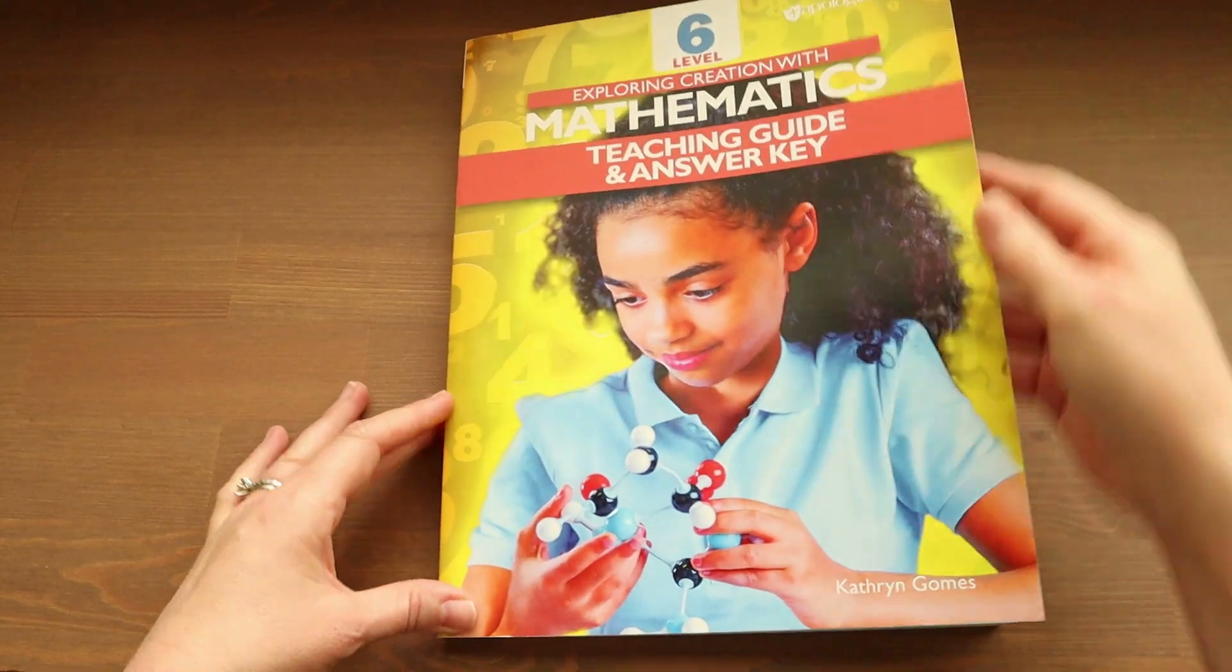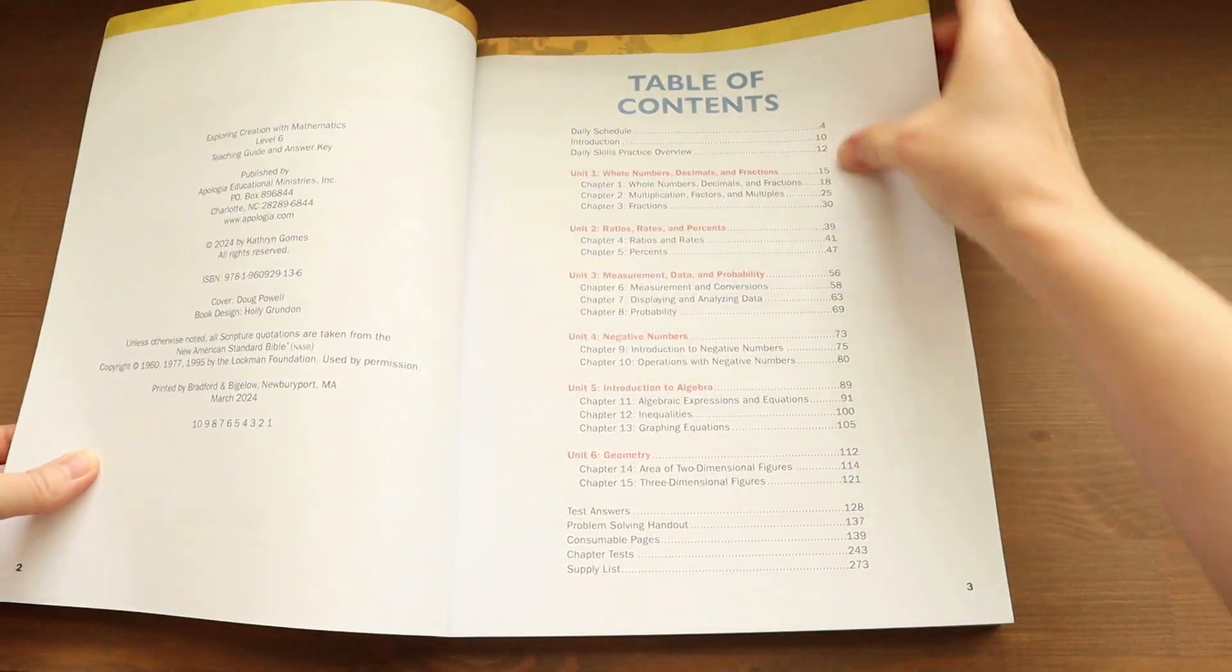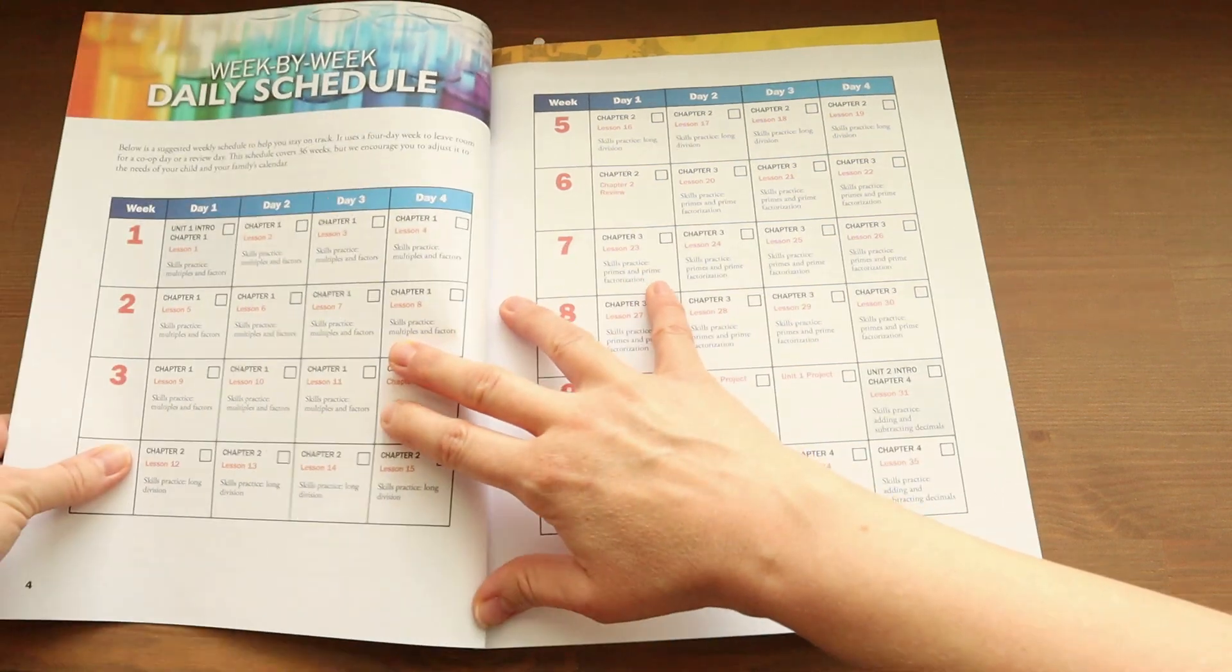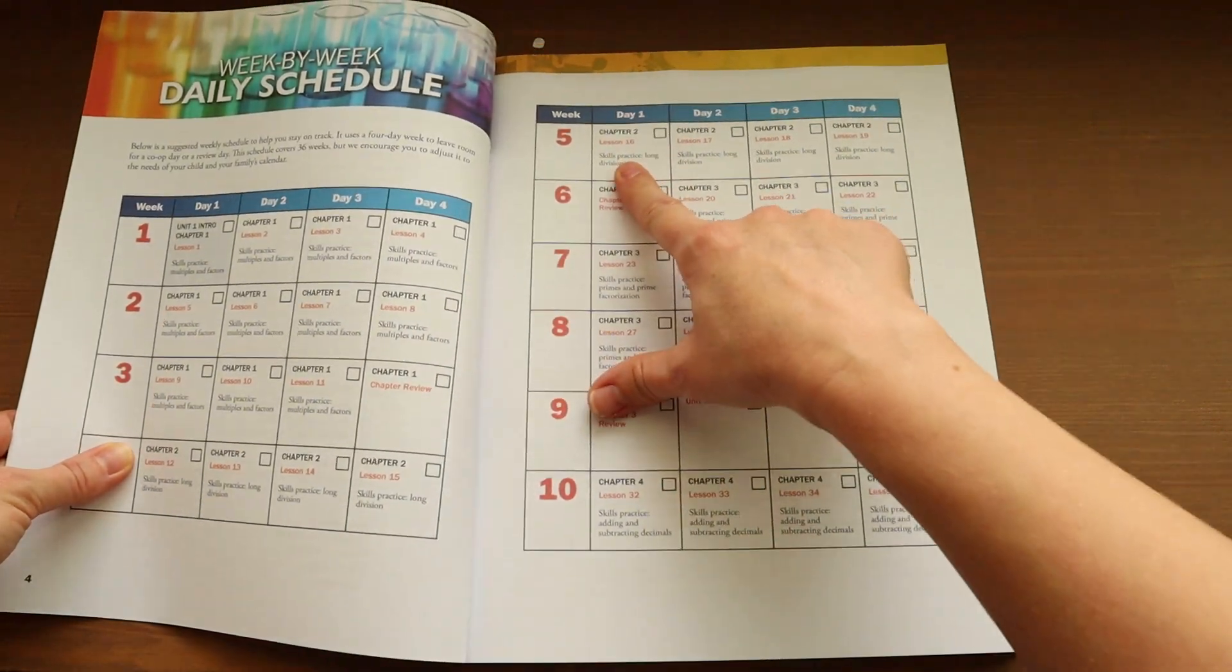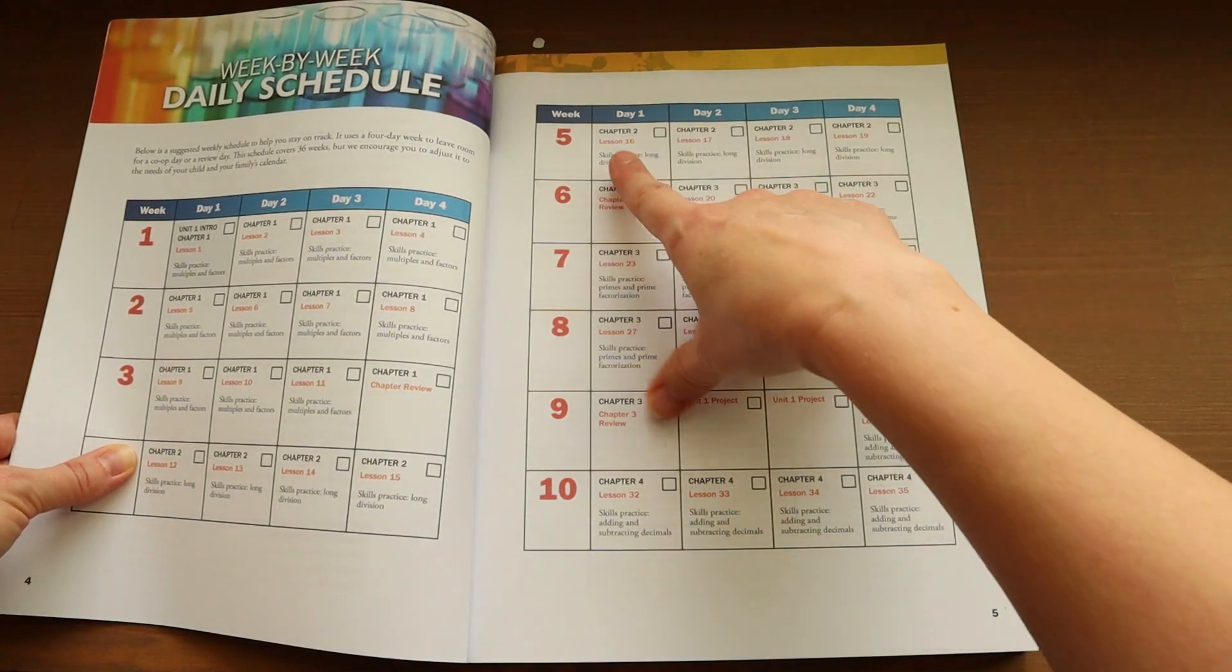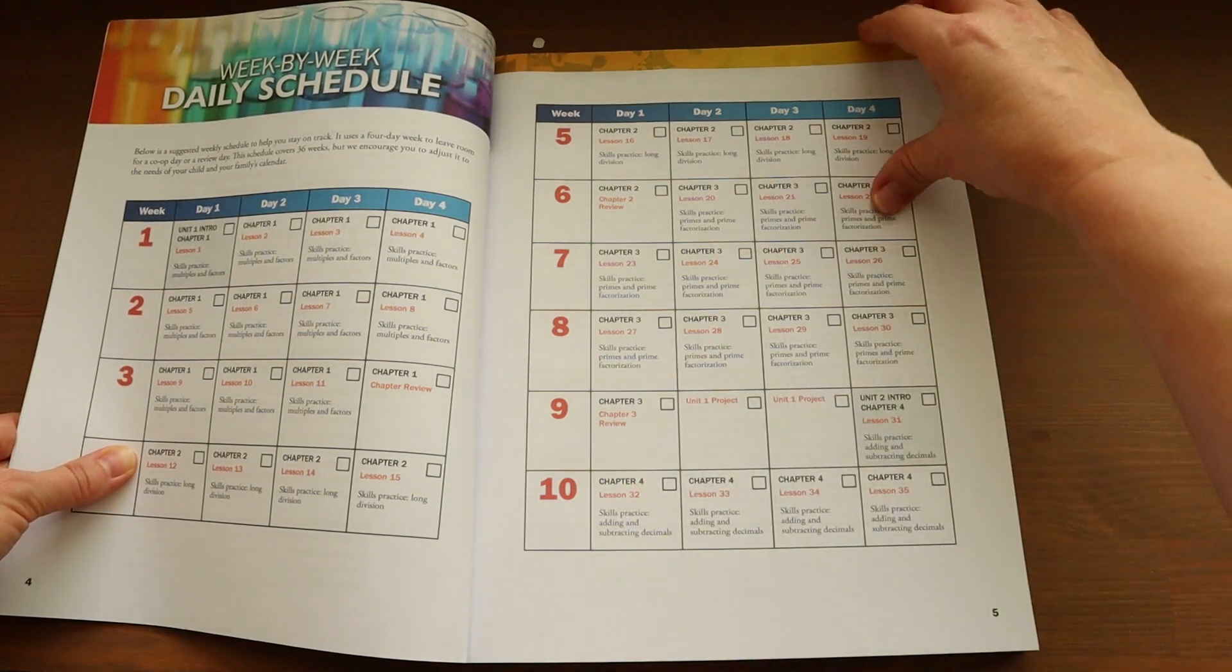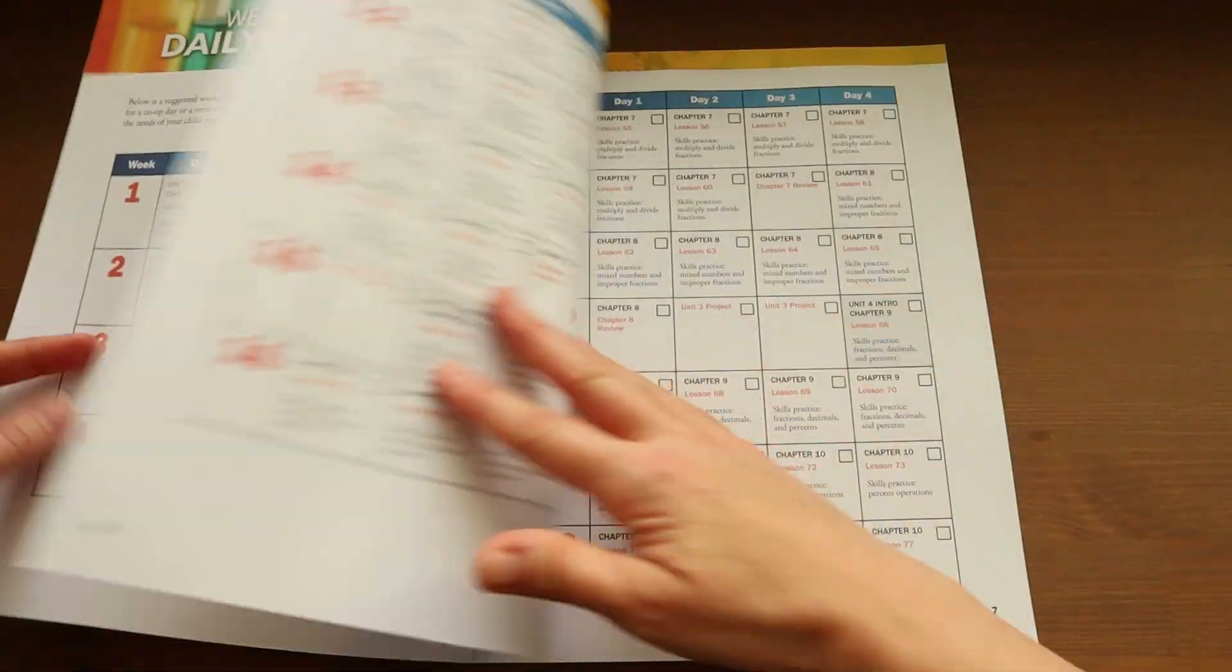Alright, you guys. So just to walk you guys through the teacher's guide real quick, as you open it, you get your table of contents and then you get the week by week daily schedule. So like I mentioned, it's only four days a week. And within the schedule, it works in not only the lessons, but also your projects and your chapter reviews.